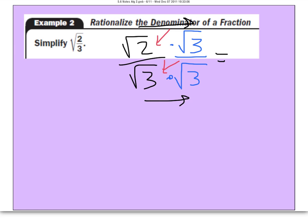We can do that. Two times three on the top is going to be the square root of six. Three times three on the bottom is the square root of nine.